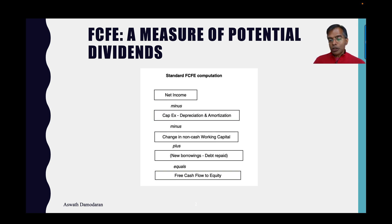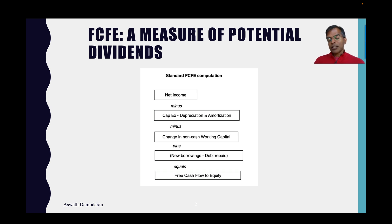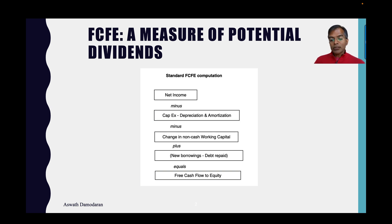So let's see where we are. You start with net income. You subtract net capex. You subtract change in working capital. And then you have to factor in that some of these needs for reinvestment and working capital might come from debt. To the extent that you increase the amount of debt — measured by looking at debt repaid set off against new borrowings — you can cover some of that reinvestment with debt.